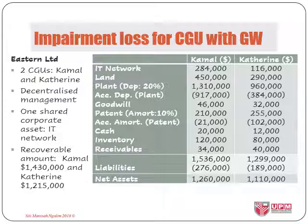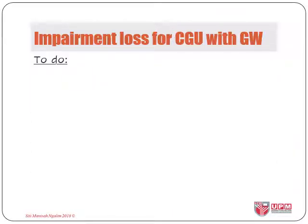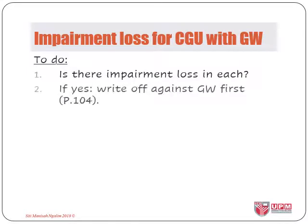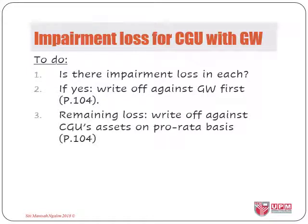For the third case, we have a situation with both goodwill and corporate assets to consider in testing for impairment. Since the company practices decentralised management, each unit is managed separately and therefore each is a CGU. The company has one shared corporate asset — the IT network — which can be allocated between Kamal and Catherine at $284,000 and $116,000 respectively. The recoverable amounts of Kamal and Catherine are at $1.43 million and $1.215 million respectively. We first determine if there is impairment loss for each CGU. If there is, complying with paragraph 104, we must first write it off against goodwill and the remaining loss shall be written off against the CGU's assets on a pro-rata basis.